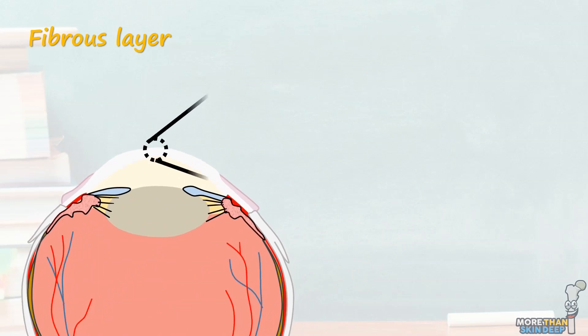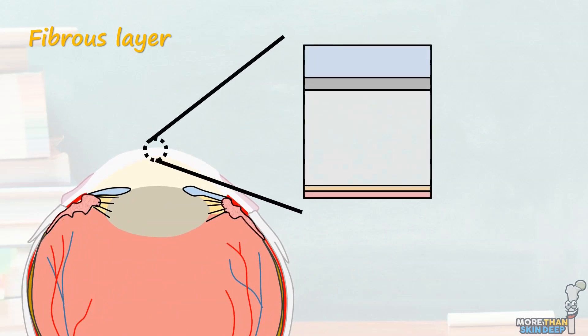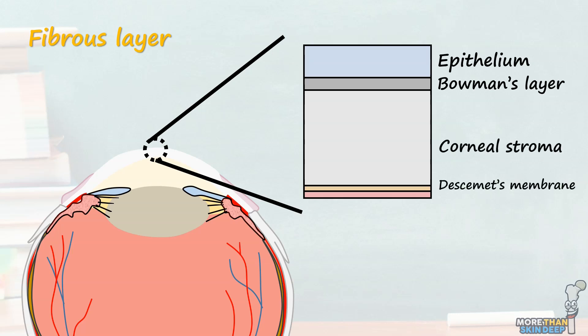There are five layers of the cornea, from anterior to posterior: the epithelium, Bowman's layer, corneal stroma, Descemet's membrane, and corneal endothelium. The corneal endothelium contains many active ion pumps, such as the sodium-chloride pump, which forces water out of the cornea to help maintain its relatively low hydration status. The cornea is also avascular and relies on diffusion of oxygen and other nutrients from the tear film and aqueous humour.